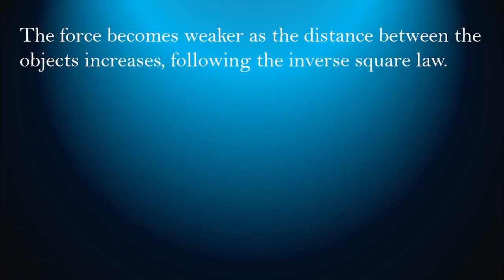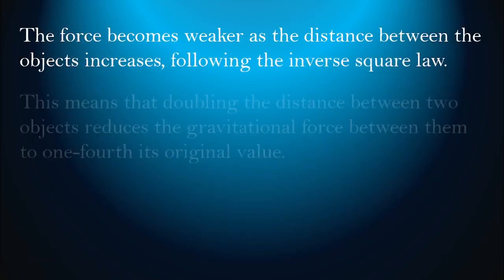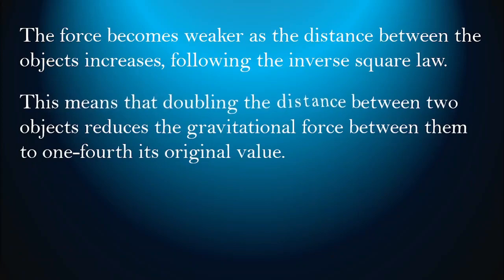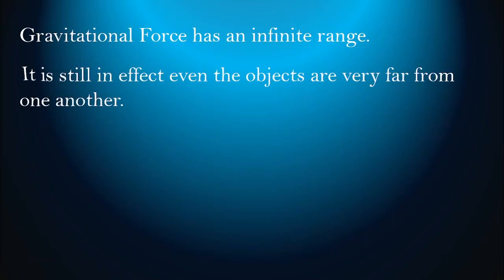The force becomes weaker as the distance between the objects increases, following the inverse square law. This means that doubling the distance between two objects reduces the gravitational force between them to one-fourth its original value.